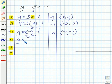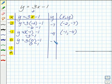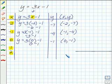y equals 3 times 0 minus 1. 3 times 0 is 0, and 0 minus 1 is negative 1. So our next ordered pair is (0, negative 1). I'll let you finish the last two — find our last two ordered pairs, click continue when you're done, and we'll finish the problem together.